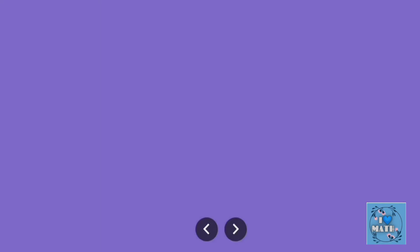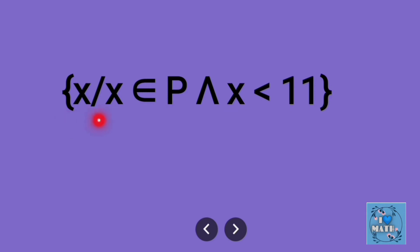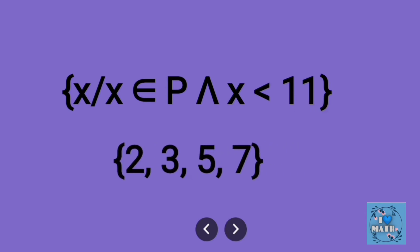Next example: { x | x ∈ P, x < 11 }. Belongs to P means prime numbers less than 11. The numbers are 2, 3, 5, 7.